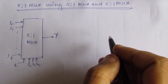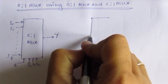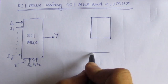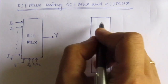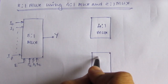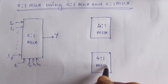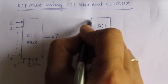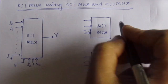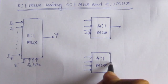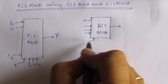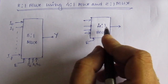Let us draw the block diagram. Here we have two 4-to-1 multiplexers — this is one multiplexer and this is another. Each is a 4-to-1 multiplexer. We will have 4 input lines on each, and one output line. In a 4-to-1 multiplexer, we will have one enable line. Whenever the enable is high, the circuit will operate.